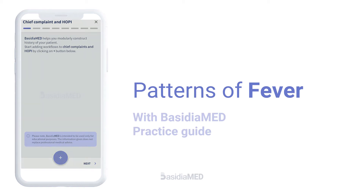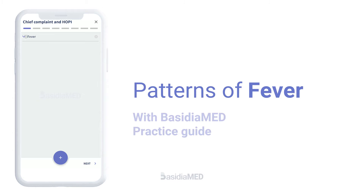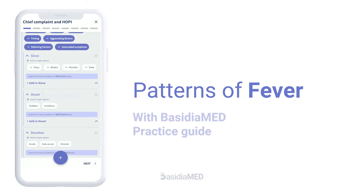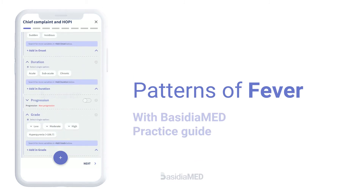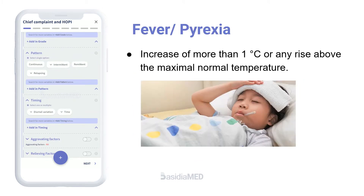Patterns of fever. The normal body temperature varies from 36 degrees Celsius to 37.5 degrees Celsius. Fever, or pyrexia, is an increase of more than 1 degree Celsius, or any rise above the maximal normal temperature.